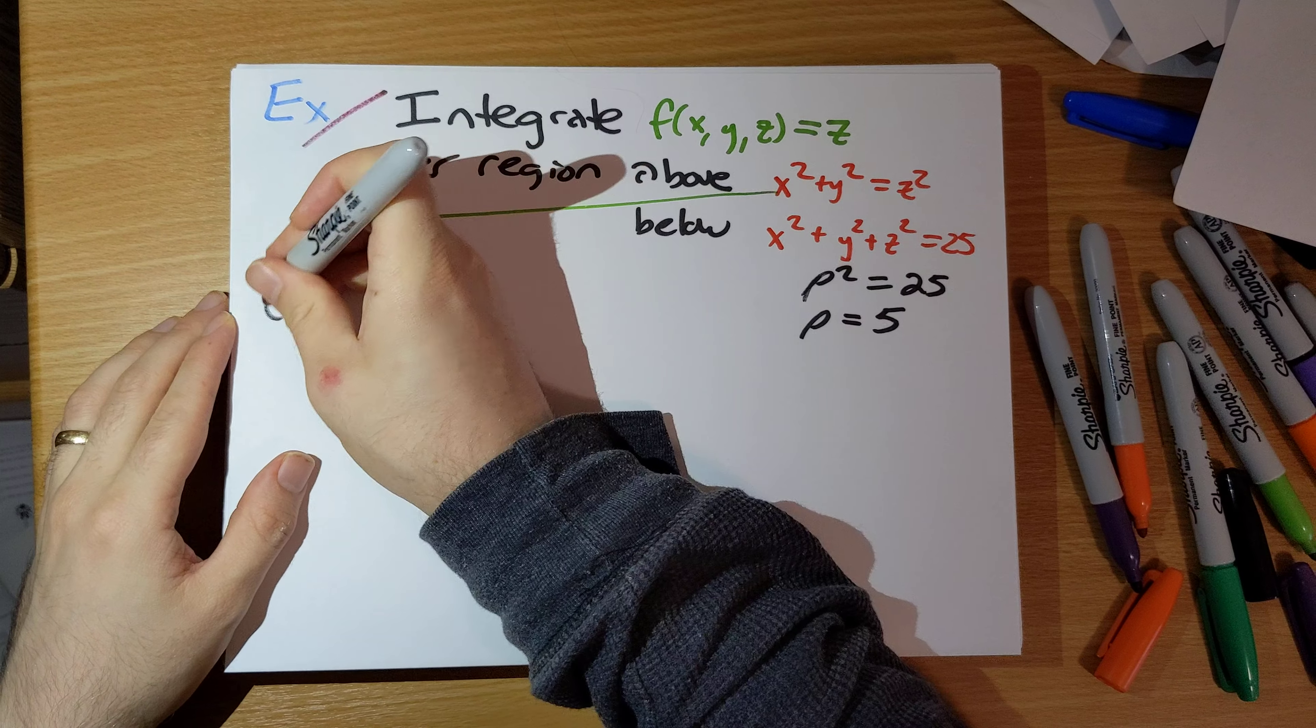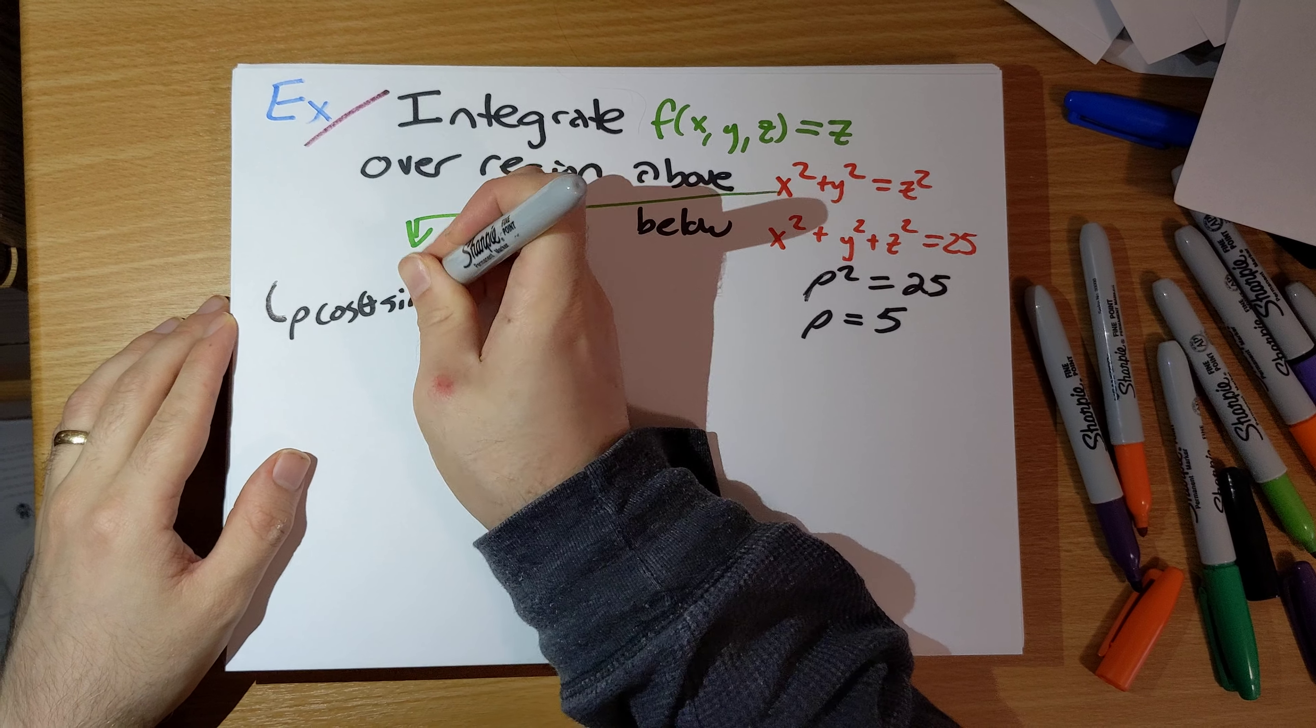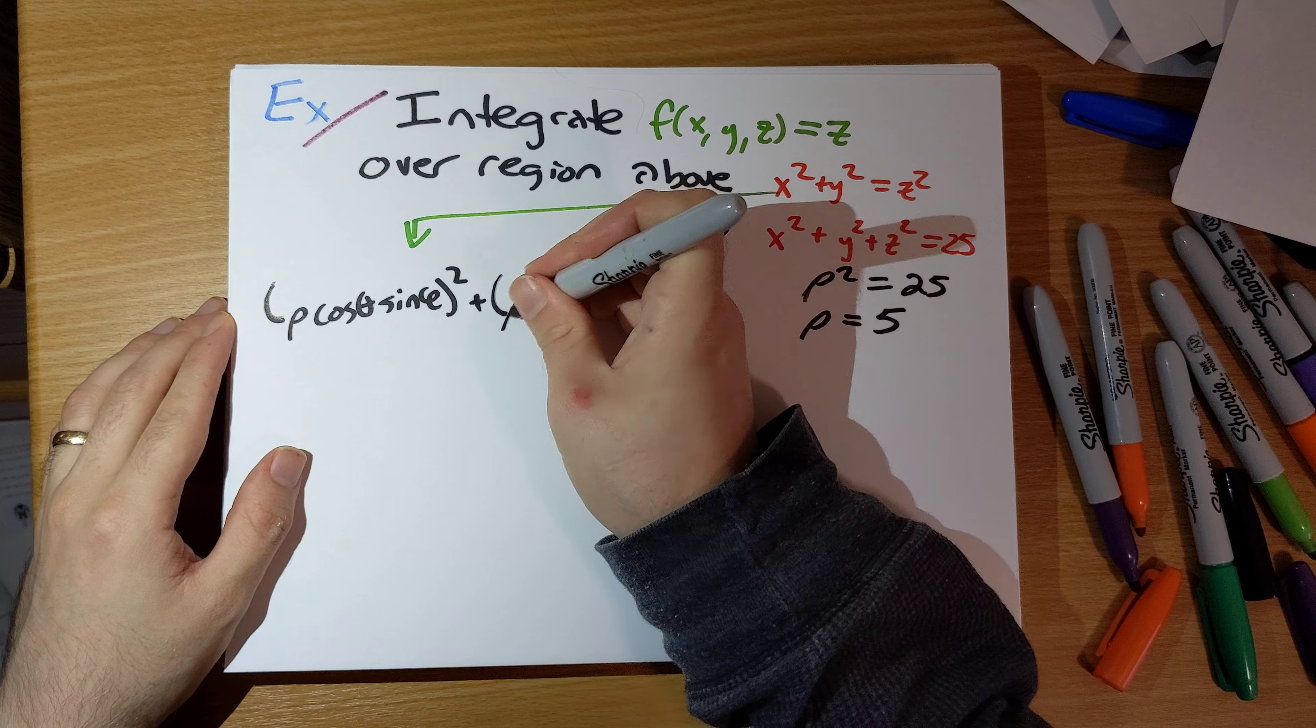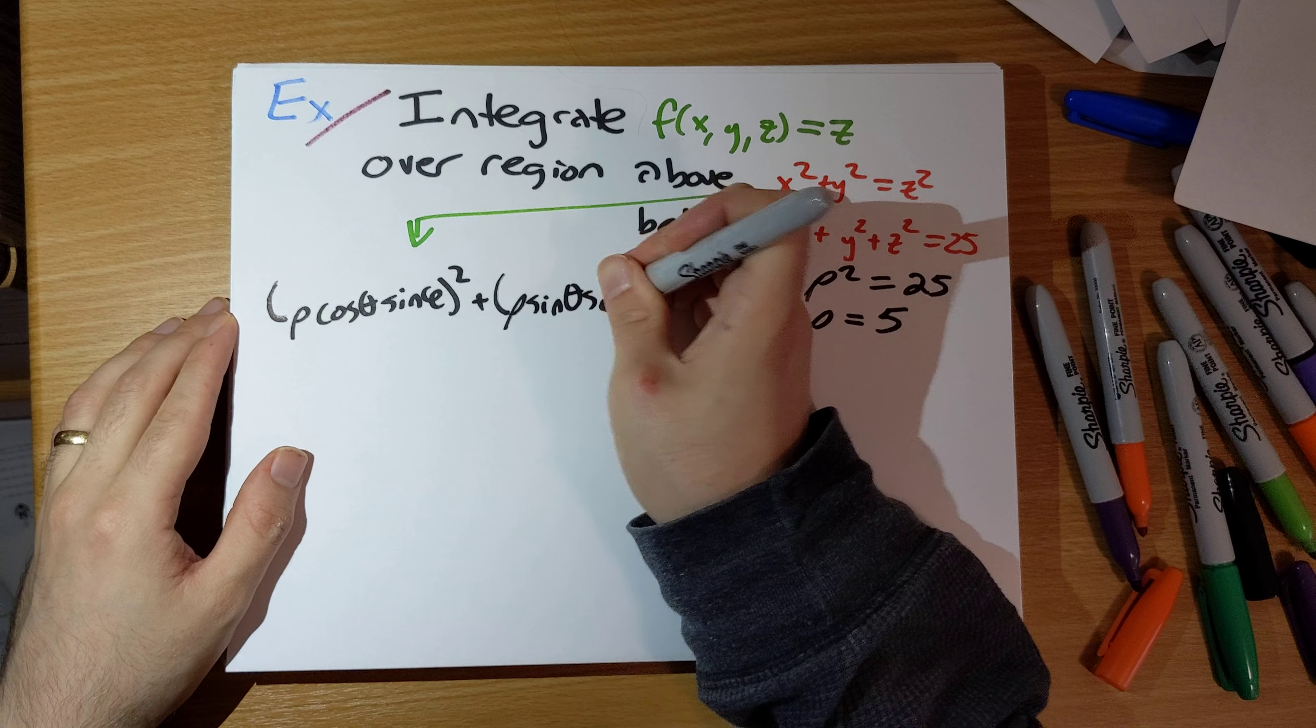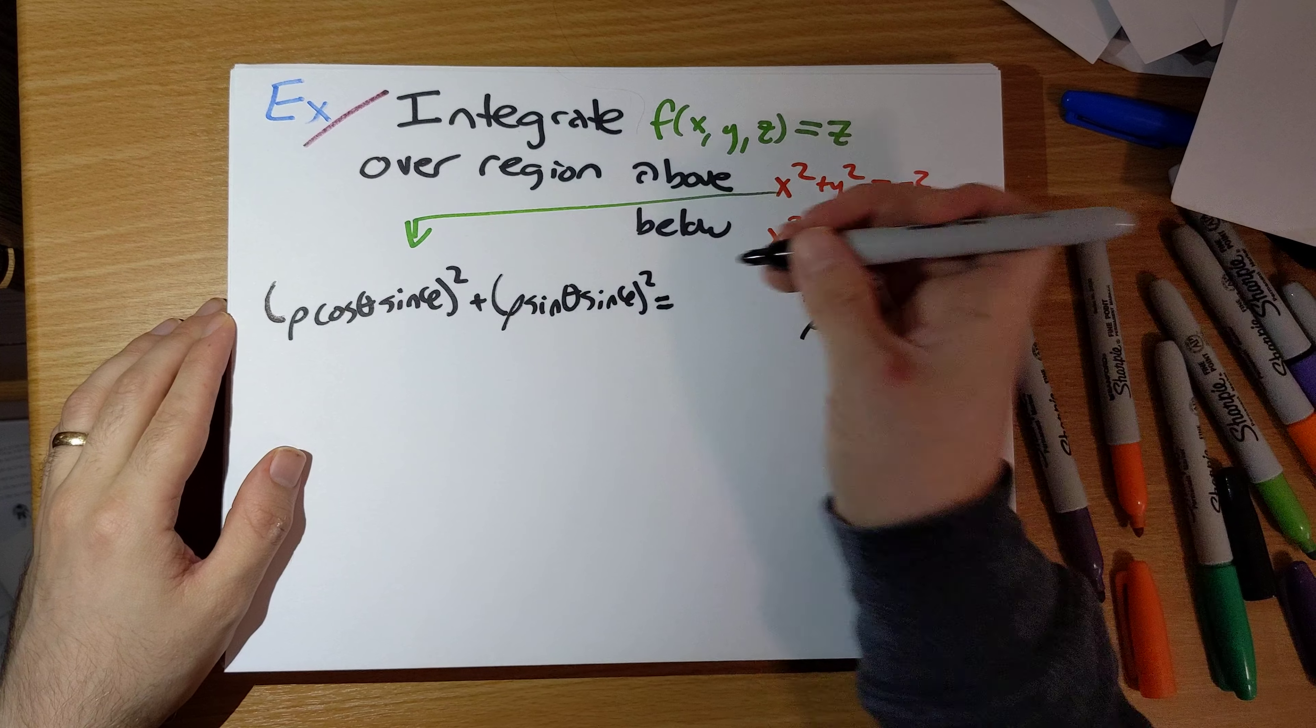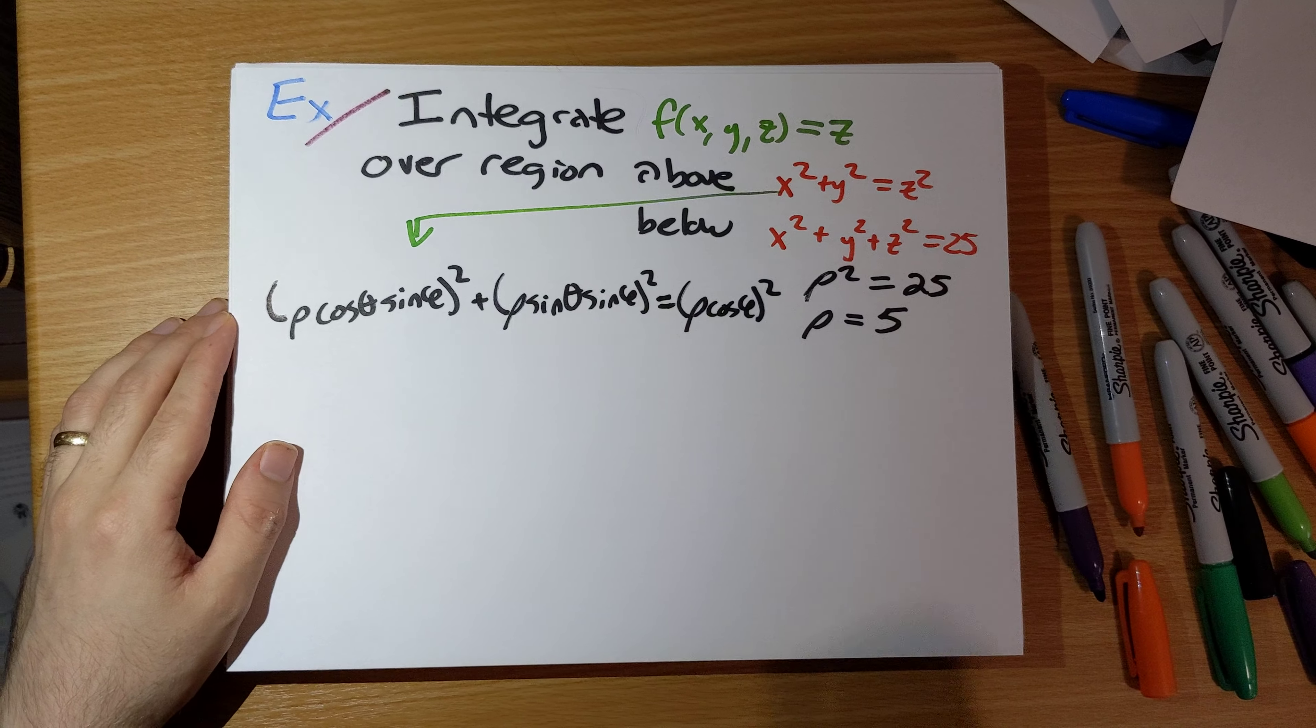x squared is rho cosine theta sine phi squared. Y squared is rho sine theta sine phi squared equals z squared, rho cosine phi quantity squared.